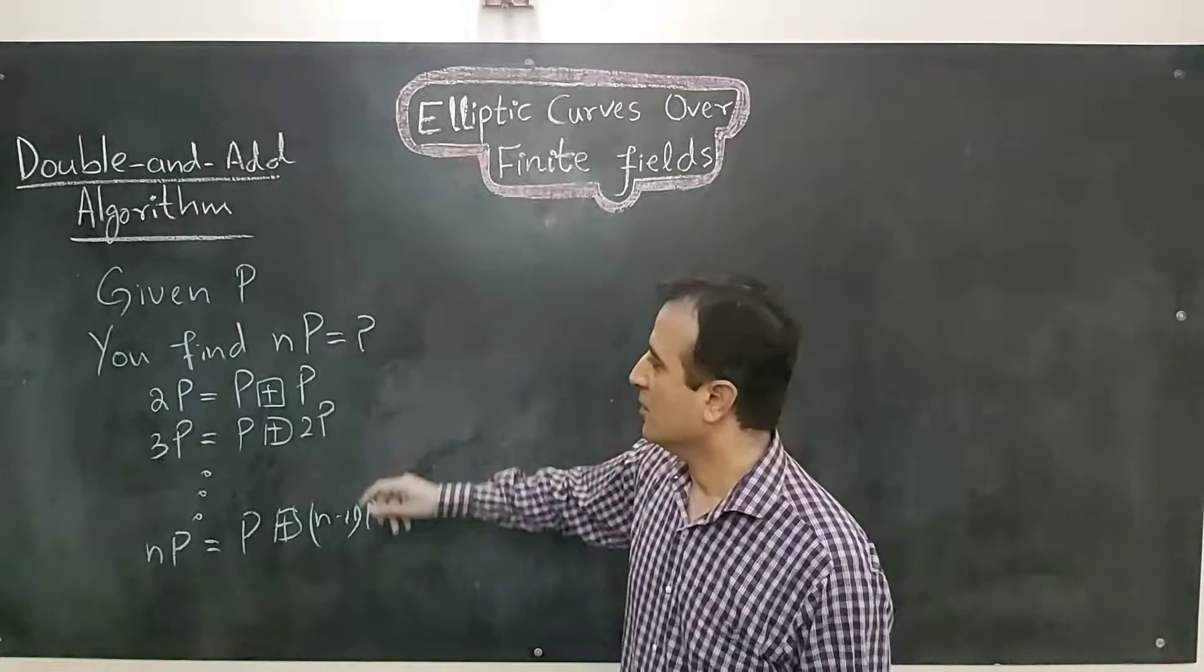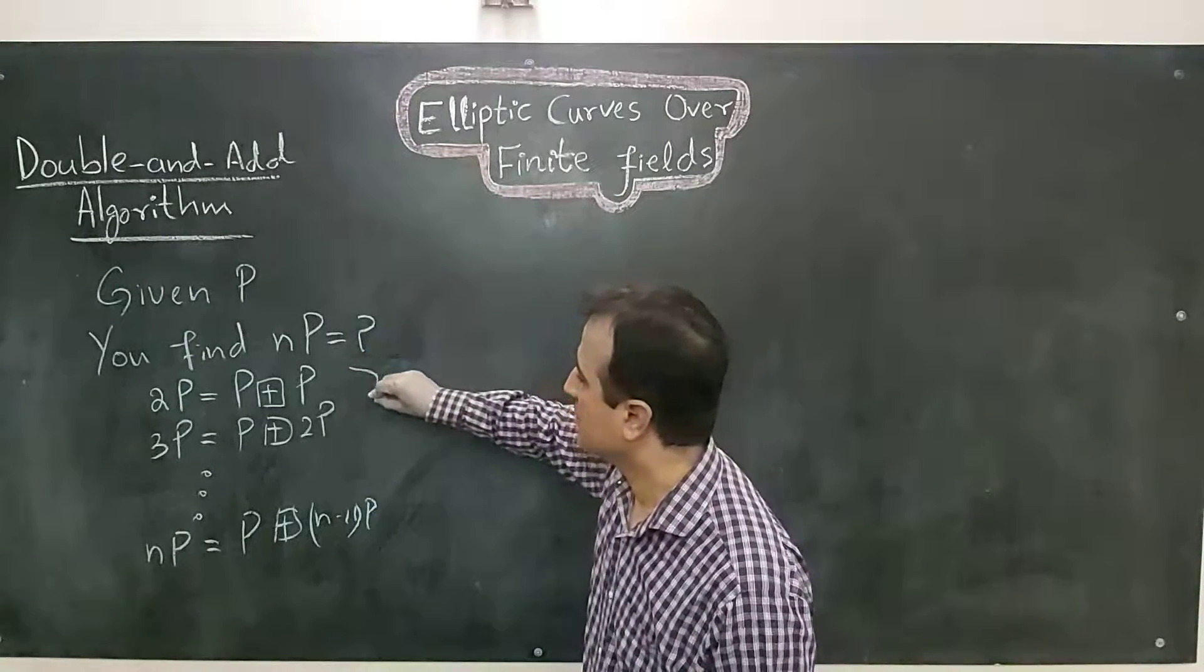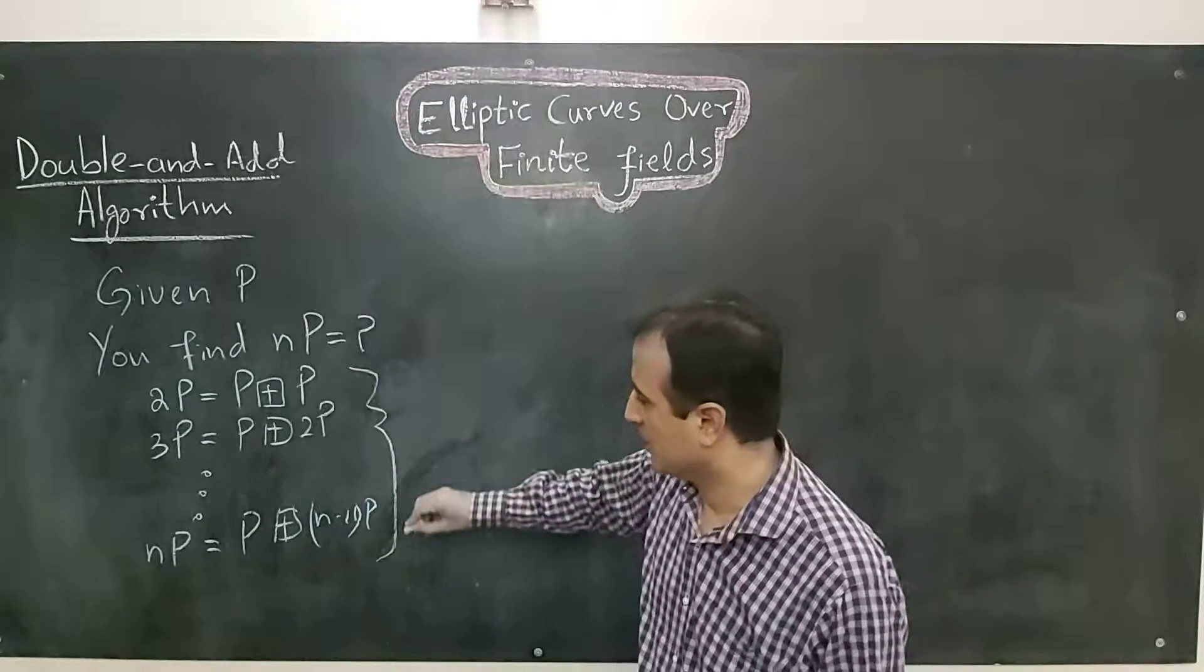So in total, you have done n minus 1 point doubling and point addition operations.